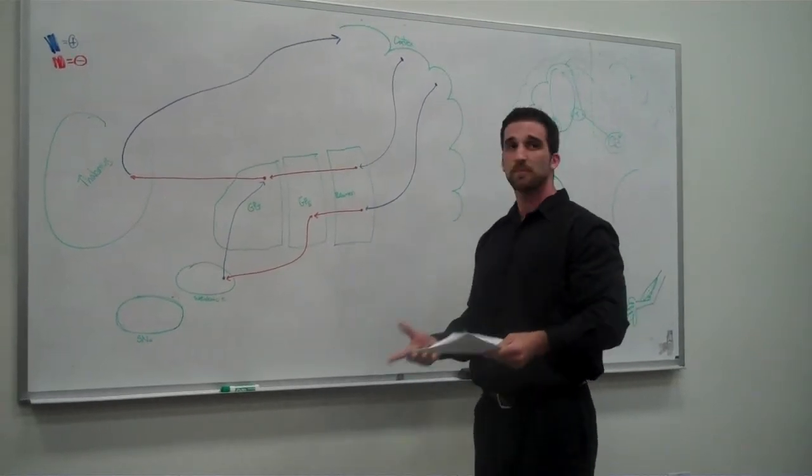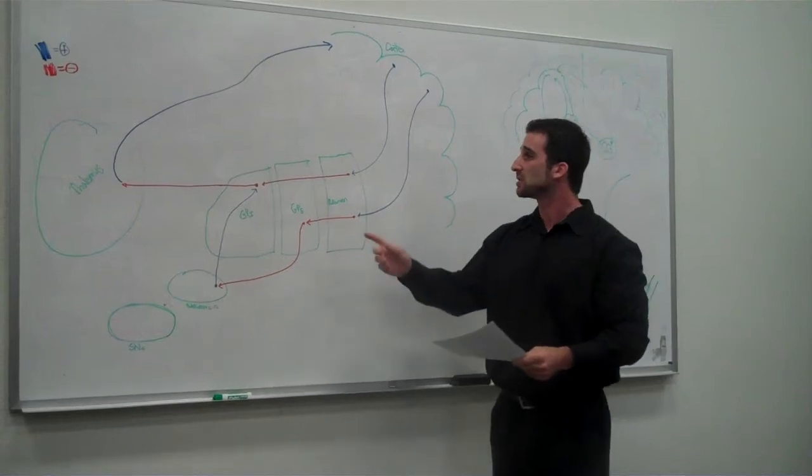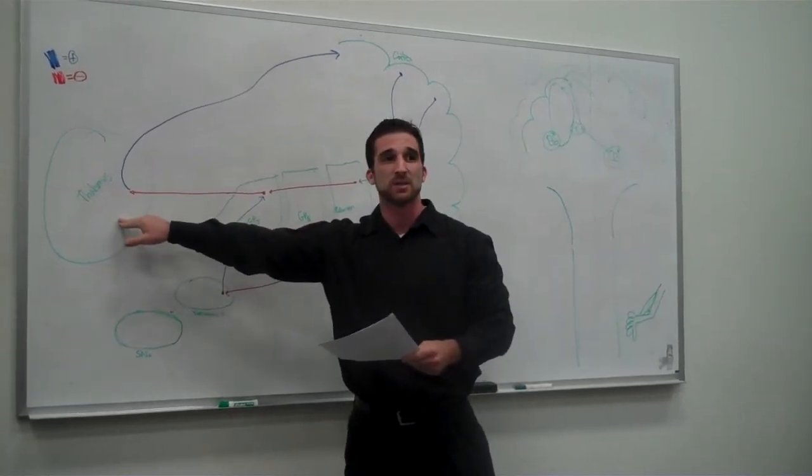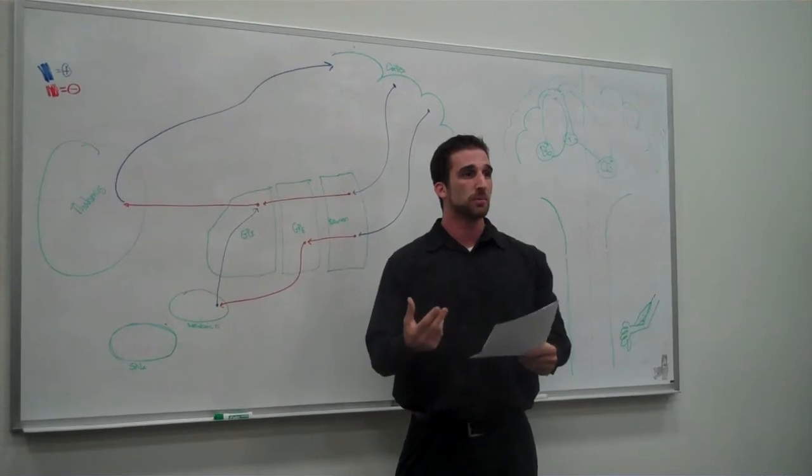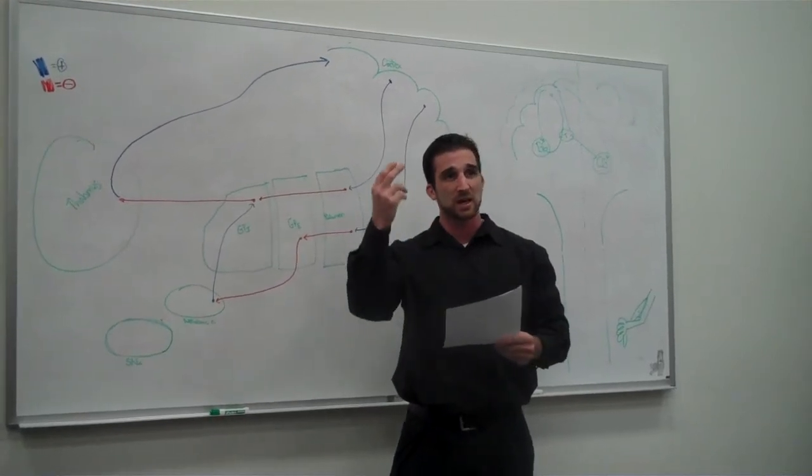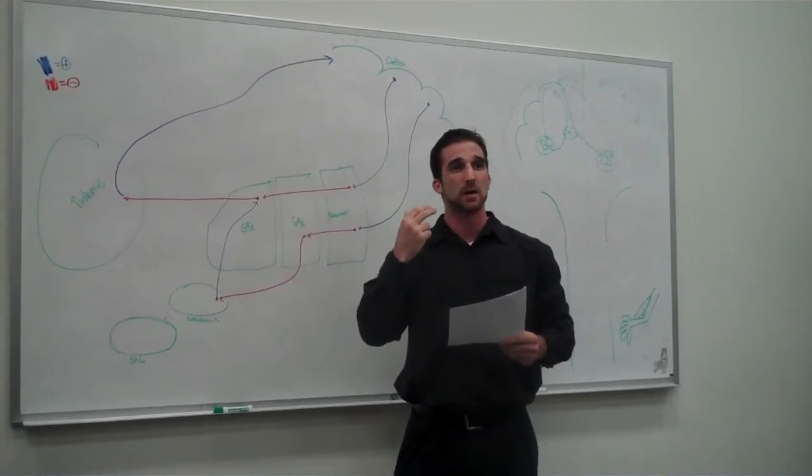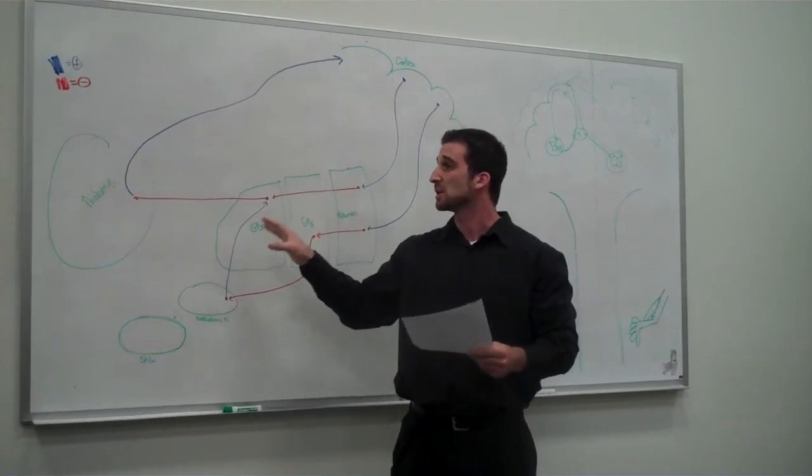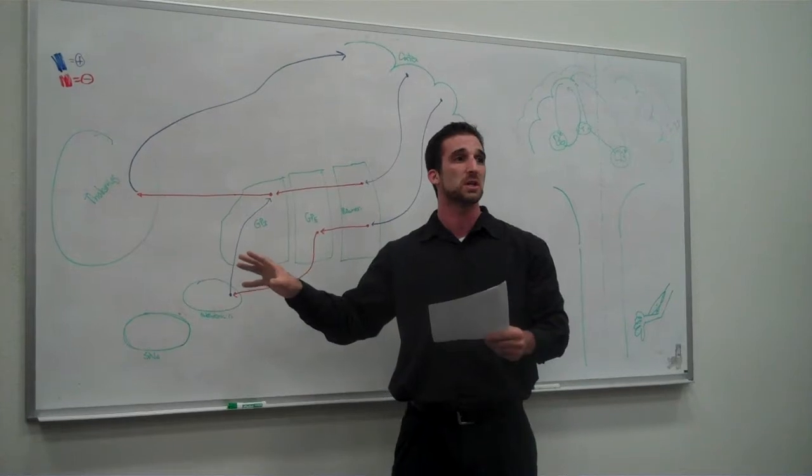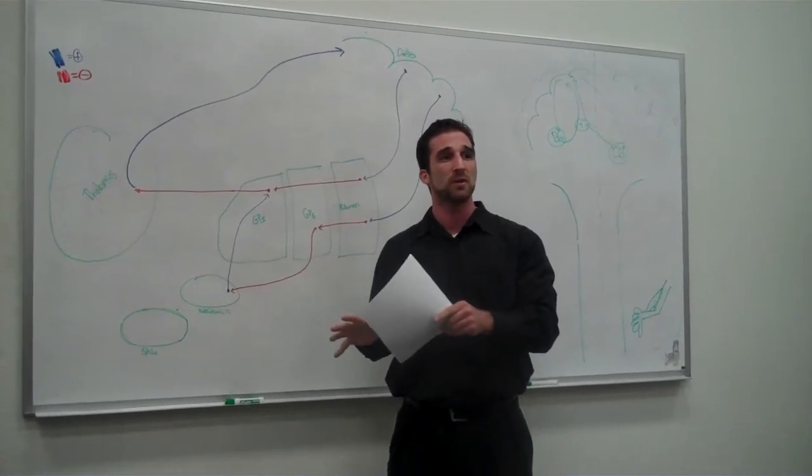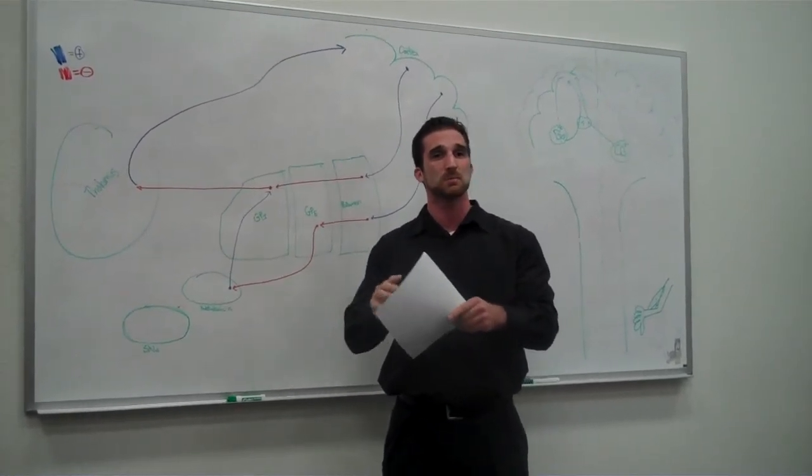What is the main function of the basal ganglia? It's to inhibit the thalamus. So when I get motor and sensory motor input into my cortex, and it goes to the basal ganglia, basically, there's going to be some signals sent to the thalamus to inhibit some of those motor sensory functions, so that only the very important one for that particular moment is expressed.